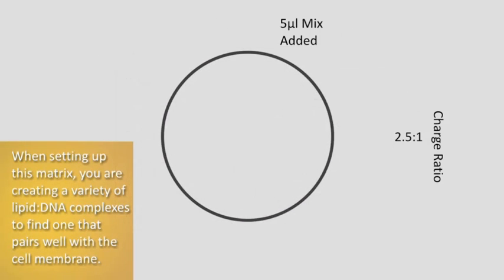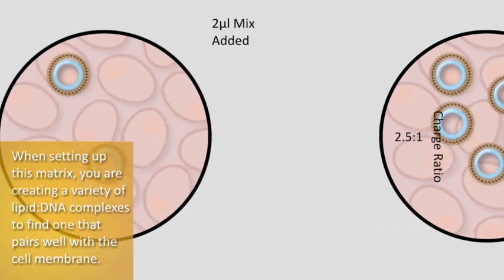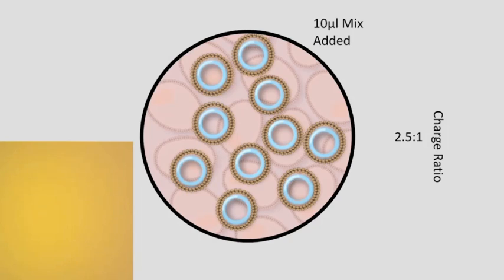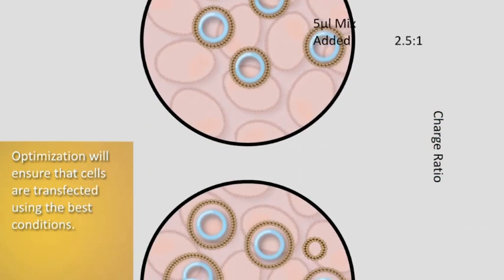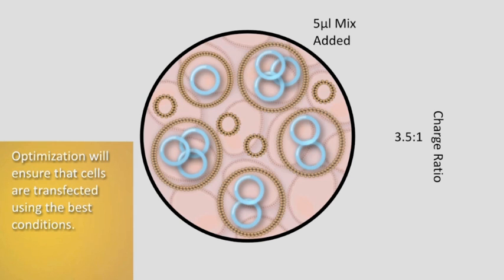When setting up this matrix, you are creating a variety of lipid-to-DNA complexes to find one that pairs well with the cell membrane. A stronger net positive lipid-to-DNA complex charge may lead to greater transfection efficiencies. Optimization will ensure that cells are transfected using the best possible conditions.